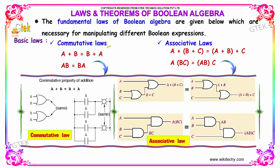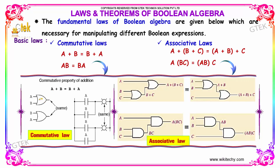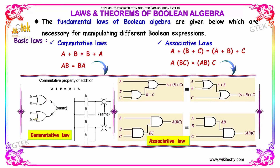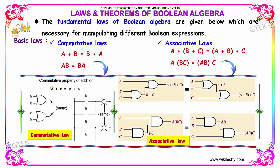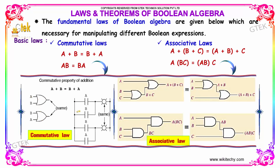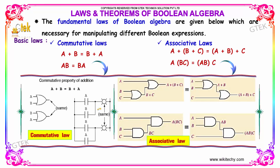The first one is the commutative law. Commutative law states that a plus b is equal to b plus a — they both are the same. Similarly, a into b is equal to b into a. That is referred to as the commutative law.